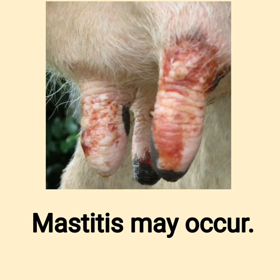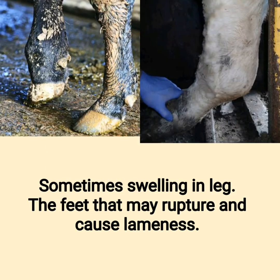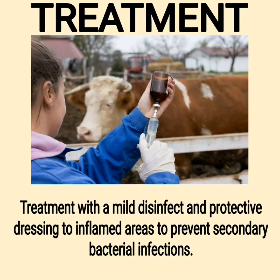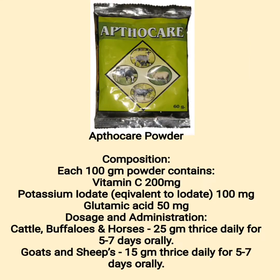Mastitis may occur, sometimes swelling in the leg, and the feet may rupture and cause lameness. Treatment involves a mild disinfectant and protective dressing applied to inflamed areas to prevent secondary bacterial infections. Apthocryl powder — composition: each 100 grams powder contains vitamin C 200 mg, potassium iodate equivalent to iodate 100 mg, glutamic acid 50 mg.